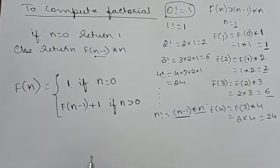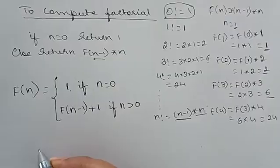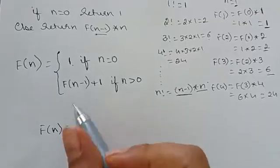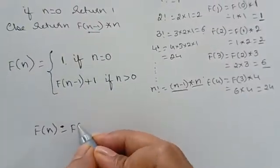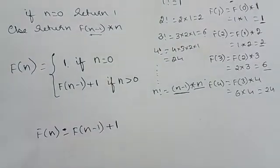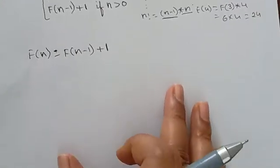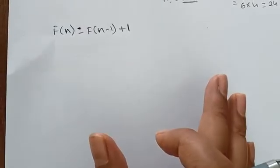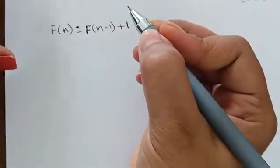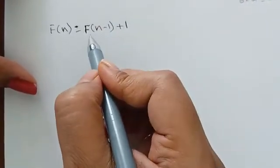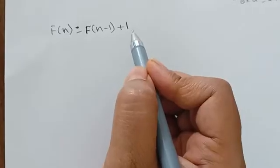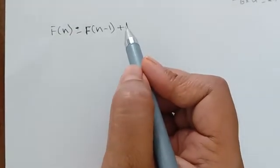Now we move to calculating the mathematical analysis for this factorial algorithm. We start with the main condition: f(n) = f(n-1) + 1. We use this to compute the mathematical analysis.